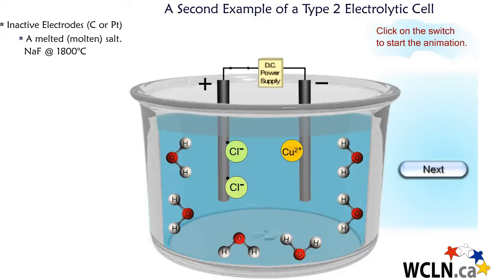Chloride ion is oxidized at the anode to make diatomic chlorine Cl2. The electrons travel up through the wire, being forced to do so by the DC power supply.